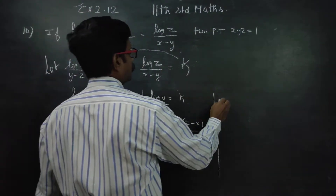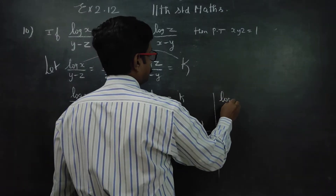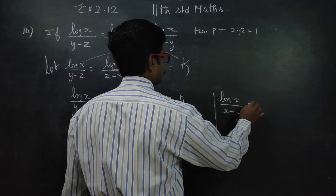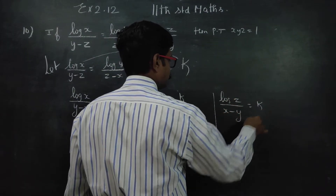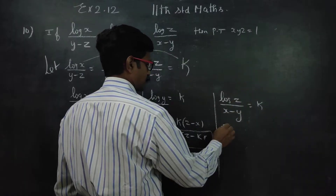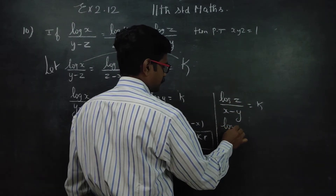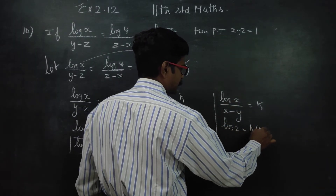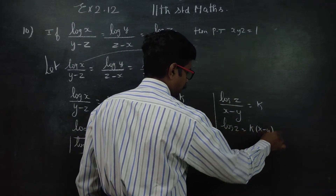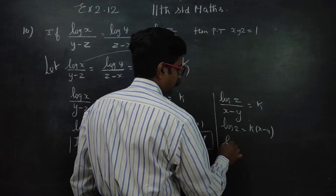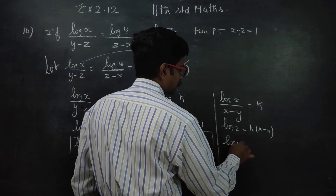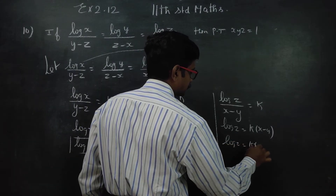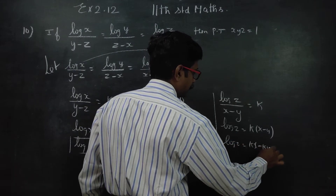Number 3: log z by (x minus y) is equal to k. Cross multiply: log z equals k into (x minus y). Therefore log z is equal to kx minus ky.